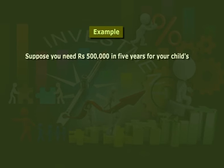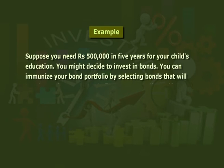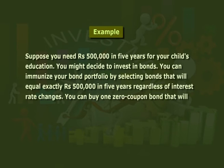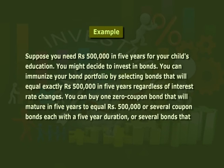For instance, suppose you need ₹5 lakh in five years for your child's education. You might decide to invest in bonds. You can immunize your bond portfolio by selecting bonds that will equal ₹5 lakh in five years regardless of interest rate changes. You can buy one zero coupon bond that will mature in five years to equal ₹5 lakh, or several coupon bonds each with a five-year duration, or several bonds that average a five-year duration. Duration measures a bond's market risk and price volatility in response to a given change in interest rates — it is a weighted average of the bond's cash flows over its life, where weights are the present value of each interest payment as a percentage of the bond's full price. The longer the duration of a bond, the greater is its price volatility.